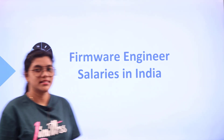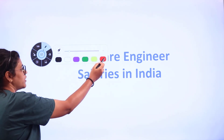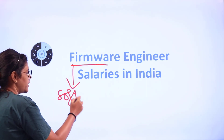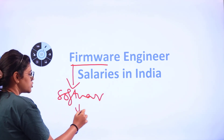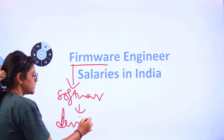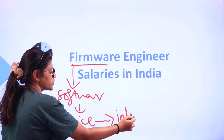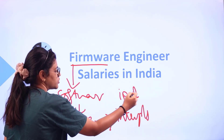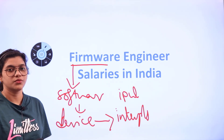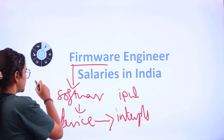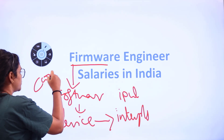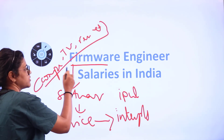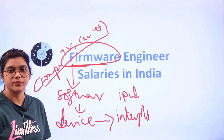We are going to understand what exactly firmware is, where it can be found, and how it can be used. Firmware is a type of software which controls a device — it interprets the inputs. The kinds of devices it interprets include computers, TVs, remotes, etc. All of these are interpreted through firmware.